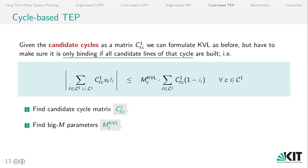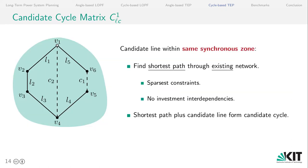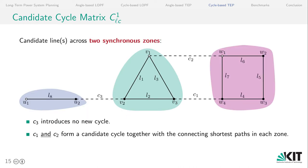What we need for this formulation is on the one hand to calculate the candidate cycle matrix C_LC1 and also find suitable big M parameters for each of these candidate cycles. For the candidate cycle matrix we have to consider different cases. So these could be lines connecting in the same synchronous zone across two synchronous zones or even multiple synchronous zones. We start with the easy case in which we find the shortest path through the existing network. We do this because it gives sparsest constraints and no investment interdependencies. So we want to avoid other candidate lines. The candidate cycle is then the shortest path plus the candidate line itself.